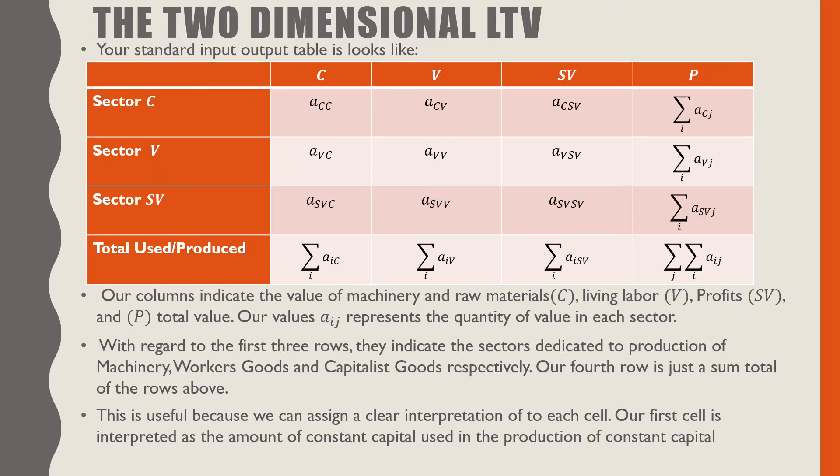Your standard input-output table looks like this. You have C, V, SV, and P along the top, and along the side you have sector C, sector V, sector SV, and you have this total used or produced term at the bottom.